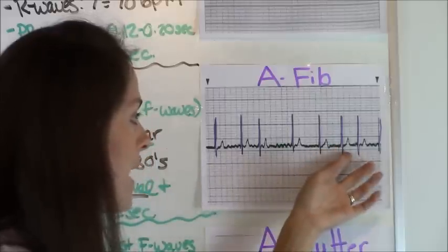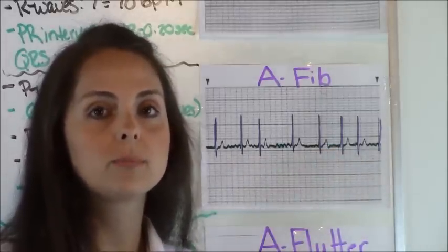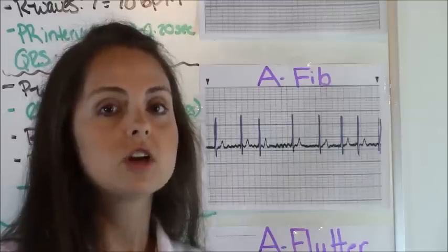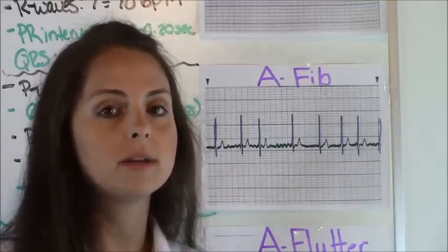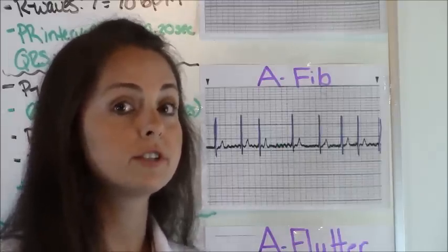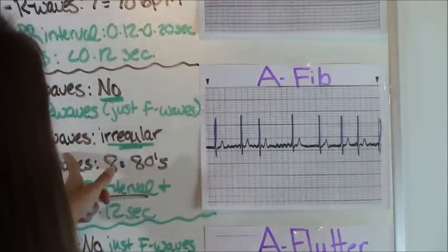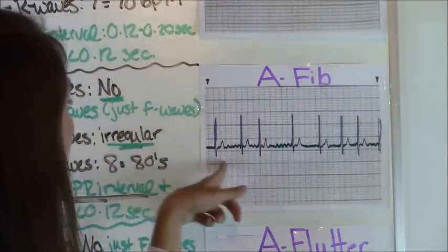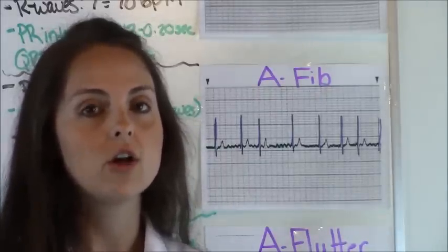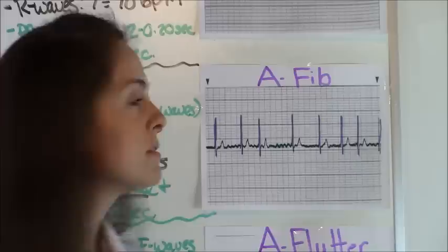You can't count P waves if you don't have P waves. So the next step — how many P waves are there? There's none, so you'd put unable to determine. Number two, are the P waves regular? Again, we don't have any P waves to count, so that would also be unable to determine.